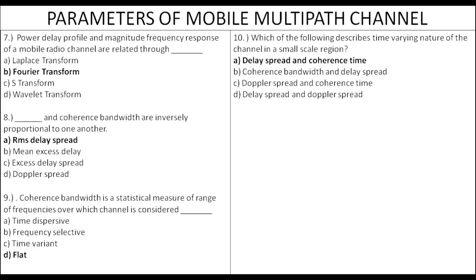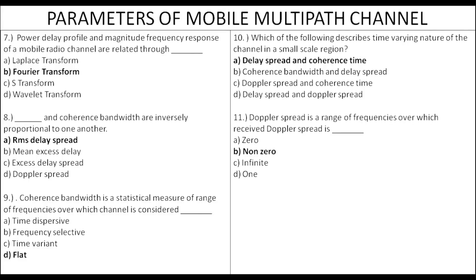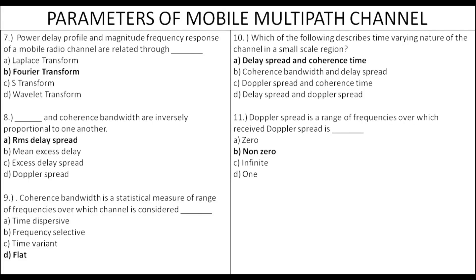Coherence time is the time varying nature of the channel. Mean excess delay and RMS delay spread are time dispersive properties. Doppler spread has non-zero values; zero values are also possible. Coherence time is the time duration over which the channel is considered stable.